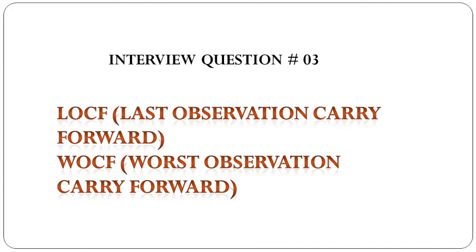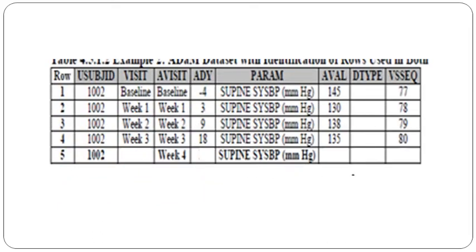These are the methods which come under the variable called DTYPE. Let's see what LOCF and WOCF are. Here you can see baseline, week one, week two, week three, and week four visits are present as per the protocol plan. A subject may not come to attend the week four visit, and at that time the AVAL value is missing.